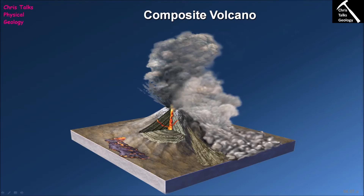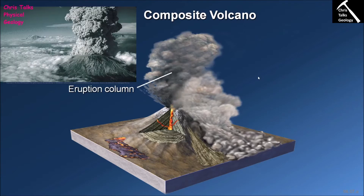So what is a composite volcano? Composite volcanoes are often quite tall and quite steeply sloped, and they're formed by the accumulation of both lava flows and pyroclastic material, which are related to the eruption of intermediate to felsic lavas. Most of the time the lava being erupted is intermediate in composition. Let's look at some of the features associated with composite volcanoes.